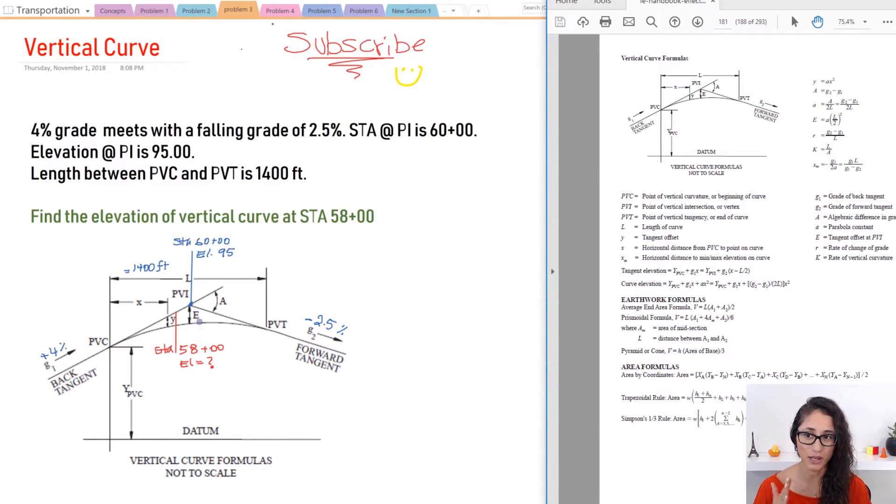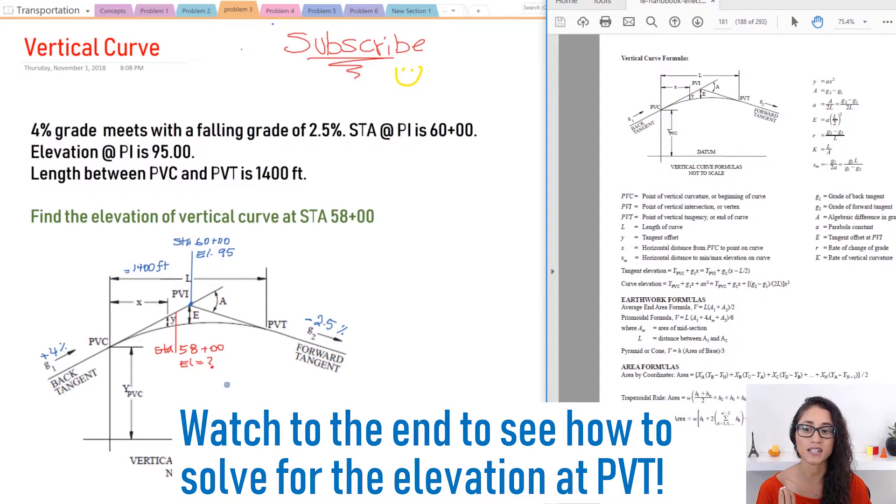So we're giving a 4% grade that's going upwards like we show here and it meets a falling grade of 2.5%. So don't forget the negative. Make sure you put the negative because the grade is going downwards. Now at PVI we're giving the station and the elevation. We're giving this length from PVC to PVT which is 1400 feet and we need to find the elevation at this station right here.